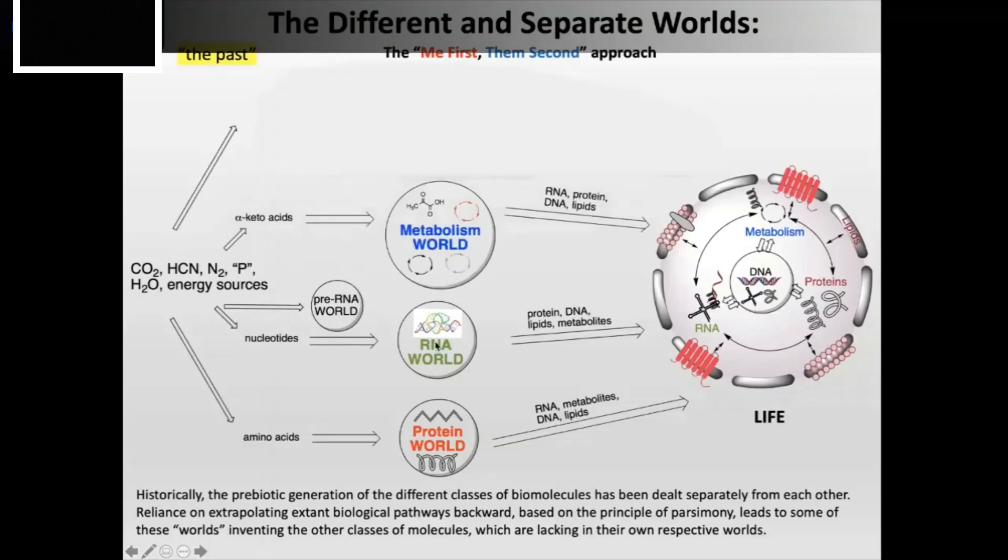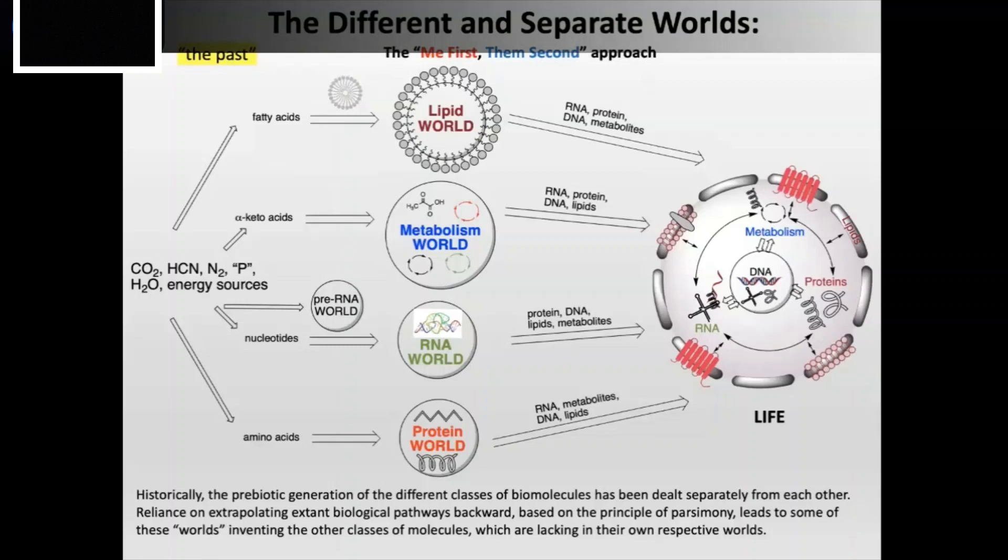Then there were people who said hold on, it must be metabolism because how do you make these building blocks? It is the metabolism that makes it. And therefore it must be the small metabolic cycle type of systems that must have come about. And then there were people who said hold on, you need to put them all together in a sack. Otherwise they will get diluted in the ocean and they will get lost. So it must have been a lipid.